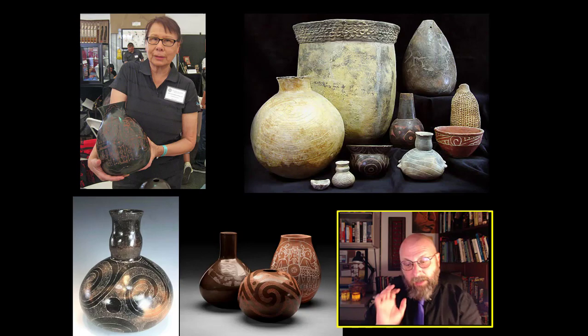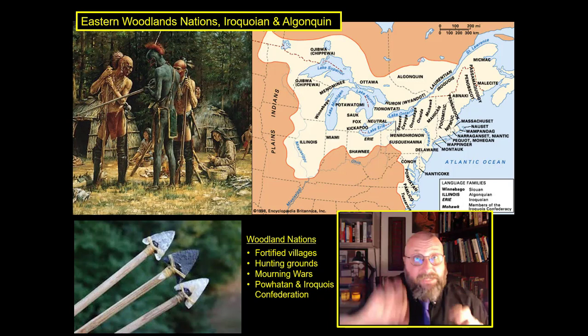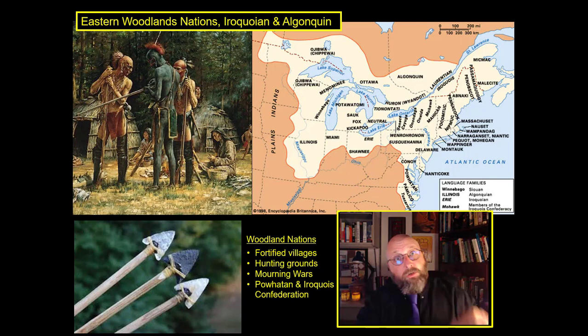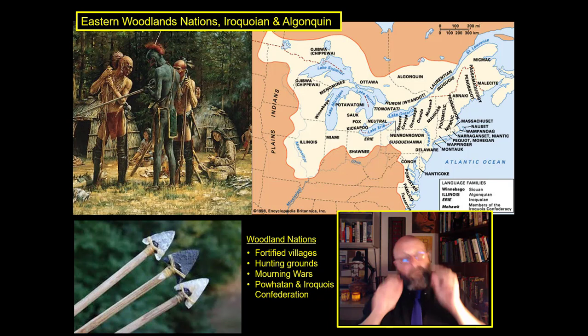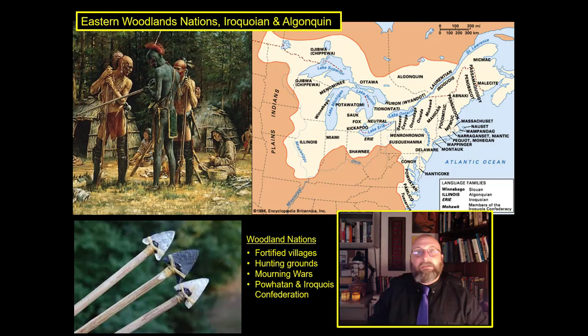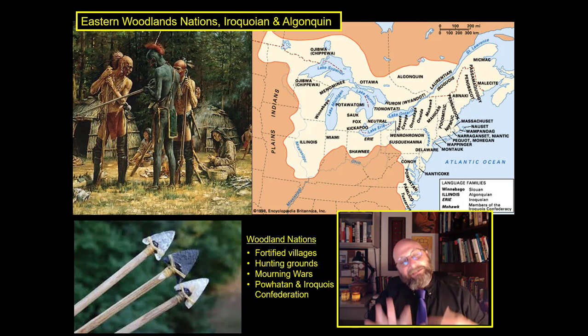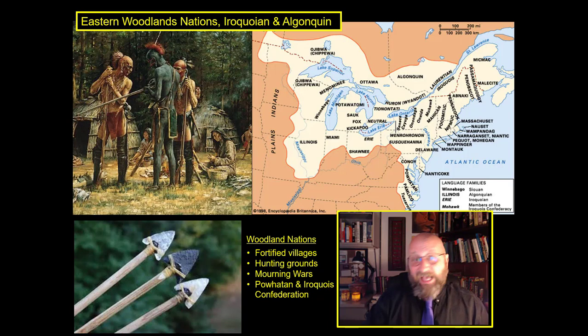Now we're going to change our focus a little bit — moving to the east and to the north. Above these Mississippian kingdoms, scattered in the woodlands of the Ohio Valley, of the Great Lakes, of the St. Lawrence Valley, and of the place we're going to call New England — the Eastern Woodlands Nations. They spoke basically two family groups: the Iroquoian languages and Algonquin languages, with a smaller number of Siouan languages to the west. For the purposes of this class, we're simply going to call them the Eastern Woodlands Nations.